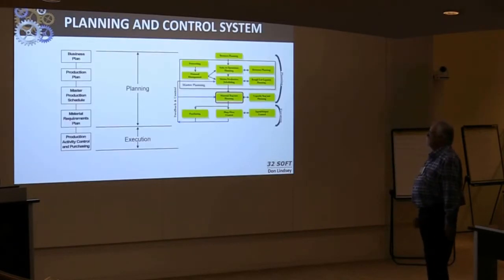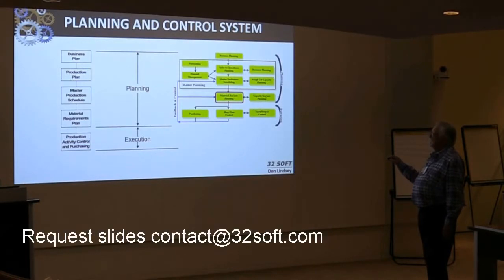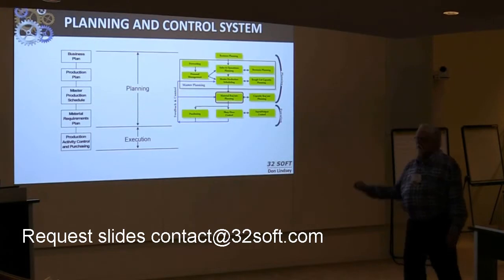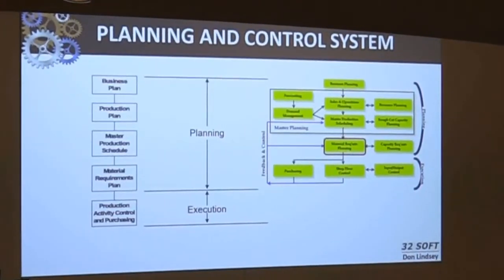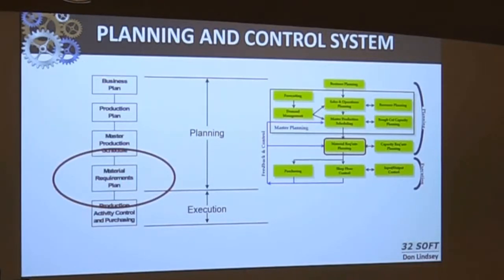In the closed loop system, as the old APICS flow chart shows, we start with business planning, which feeds down into production planning, then master scheduling, which feeds down into material requirements planning — that's where we'll spend most of the day. Once the material plan is put together, you've got purchasing and shop floor control, labor collection through 1620 or 17.1. So MRP sits in the closed loop system as one of the subsets of the ERP process.